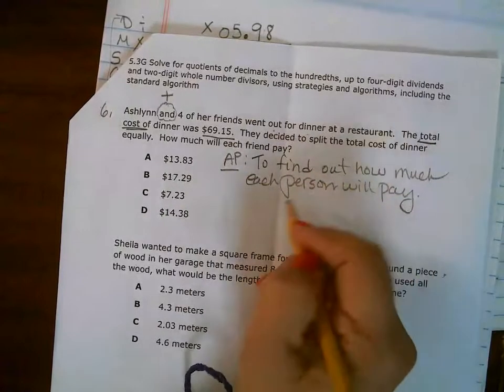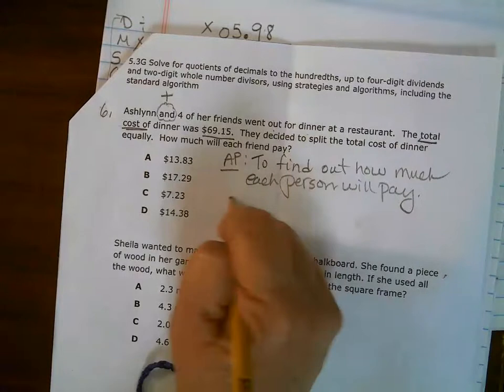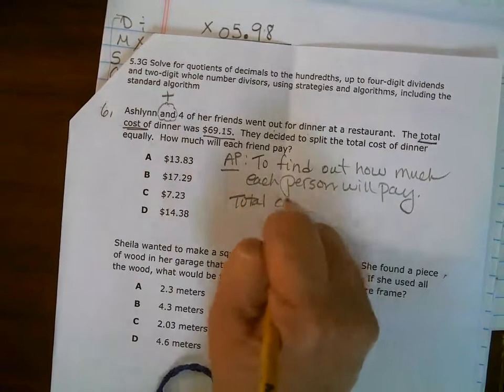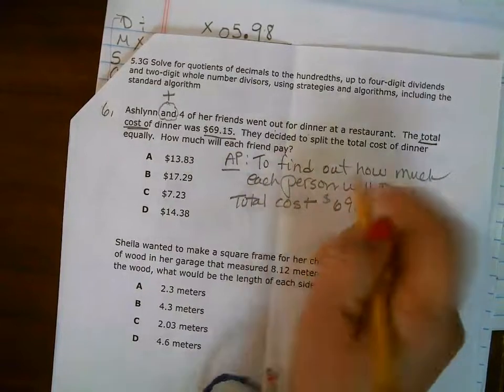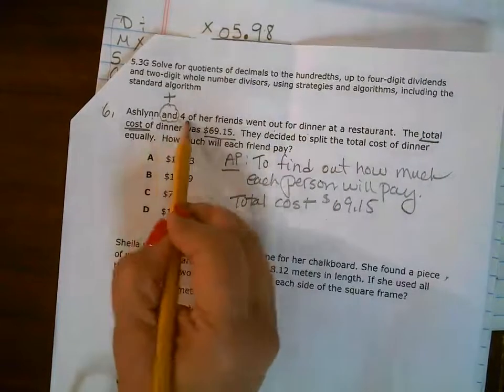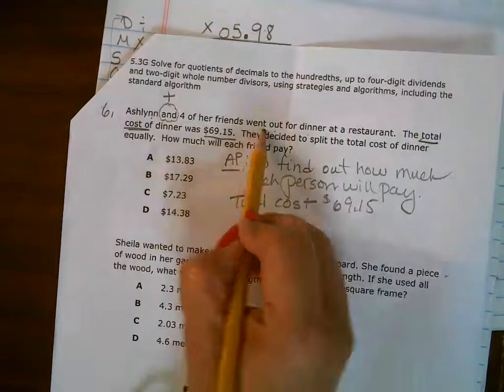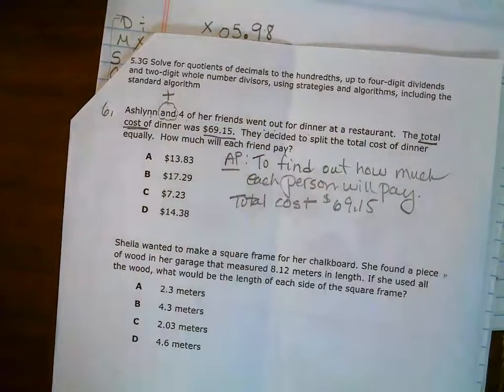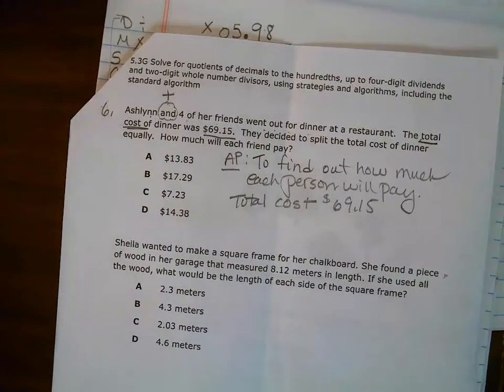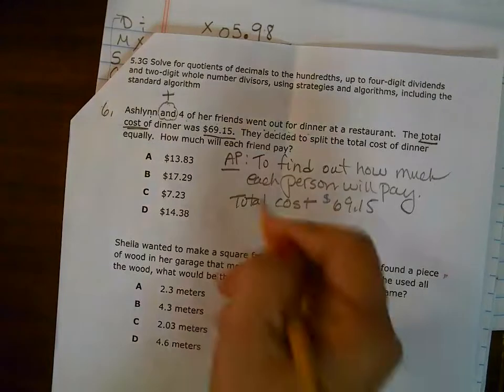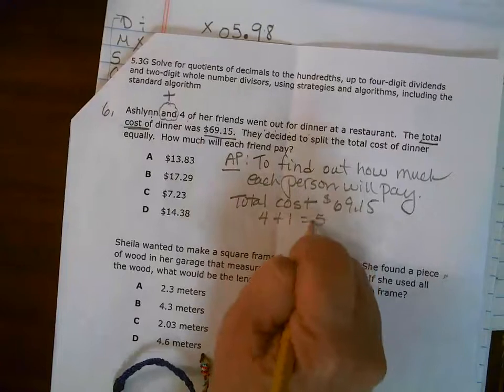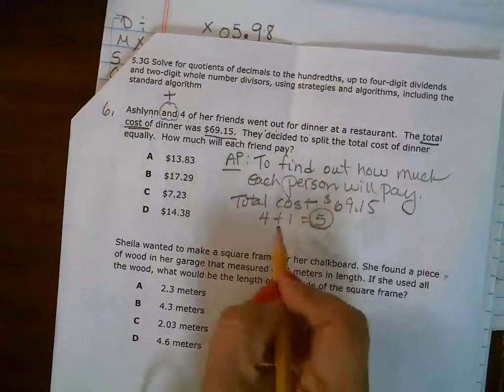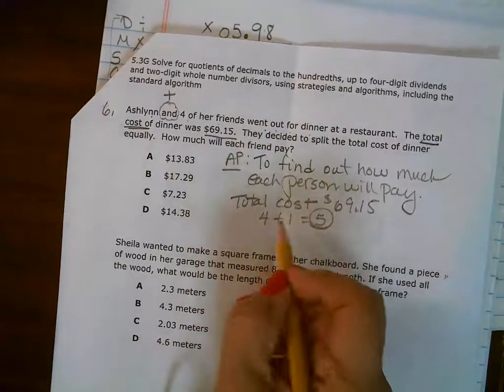Okay, what are my facts? I have a total bill. Total cost for dinner was $69.15. Ashlyn and four of her friends went out for dinner at a restaurant. So here I have four plus one equals - it's going to be five people.